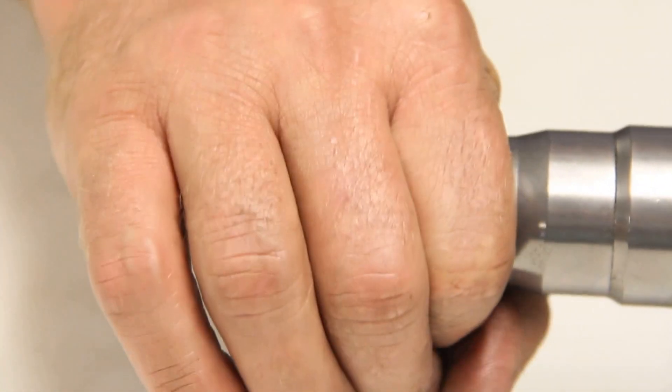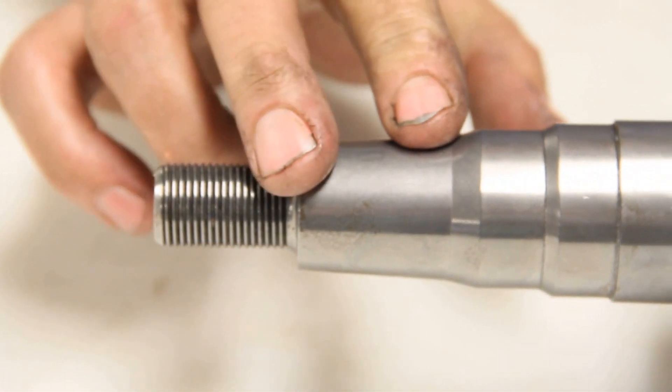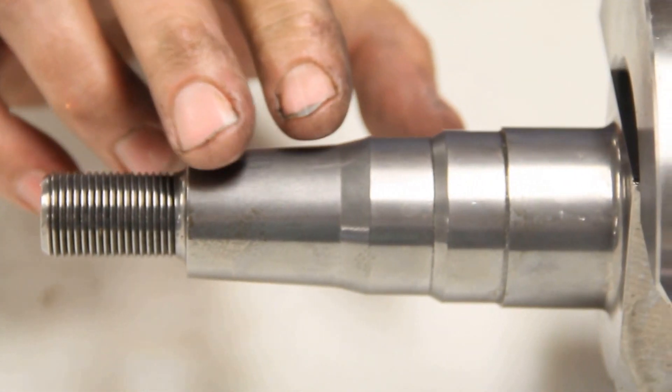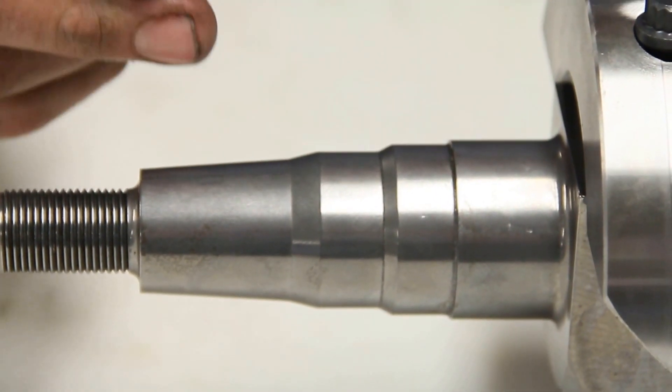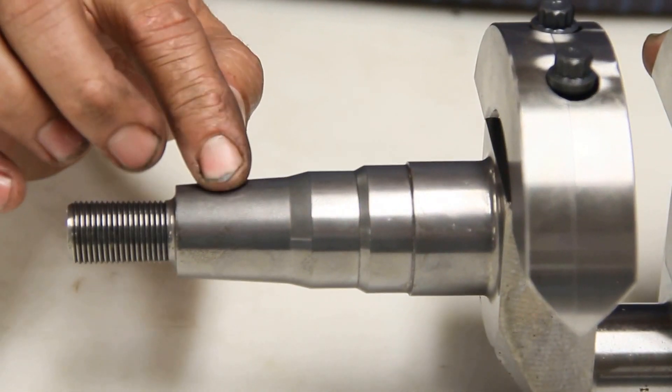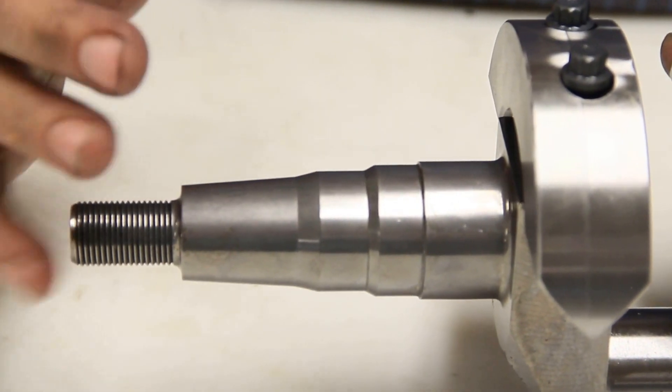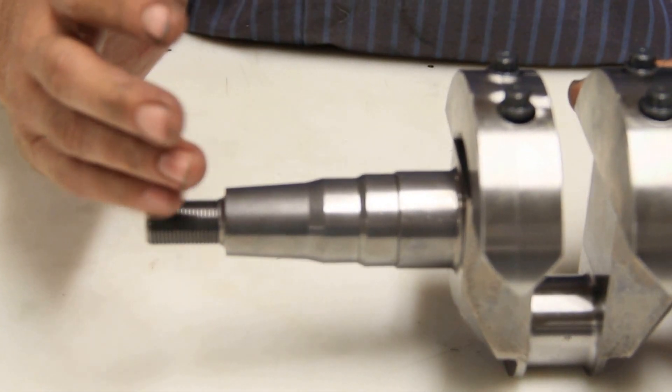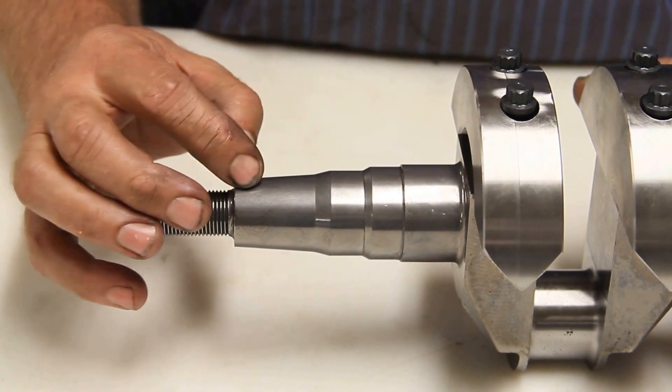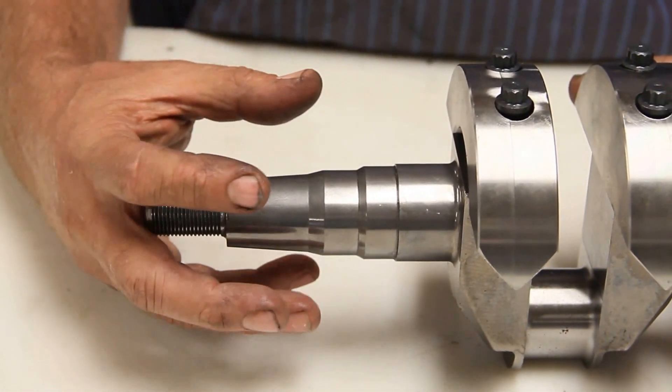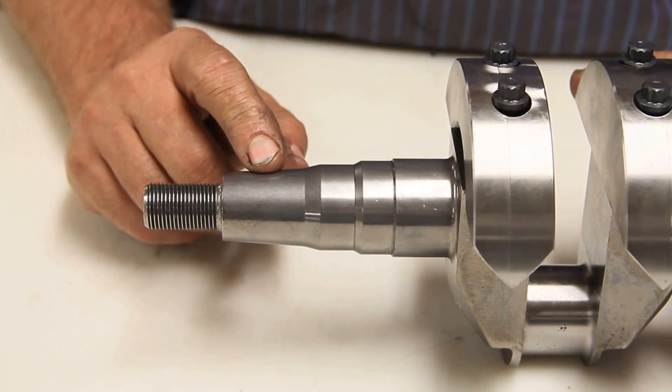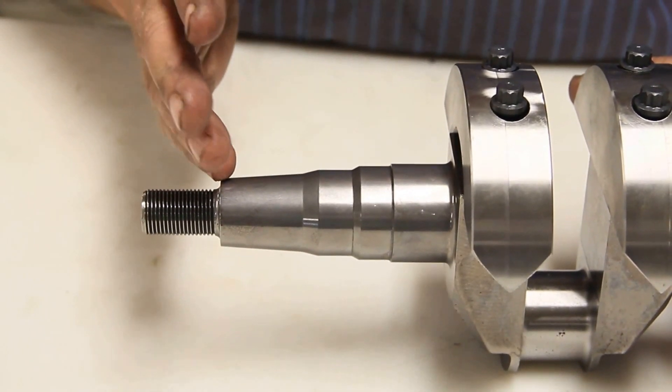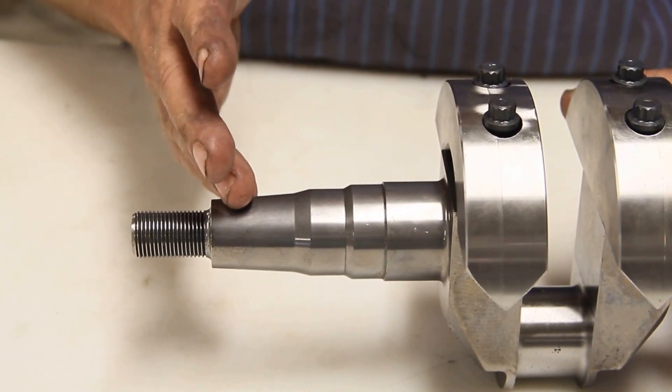I always put a little bit of red Loctite on here, that way it keeps the crankshaft from fretting. Fretting is spelled F-R-E-T-T-I-N-G, and that is when you get a transfer of metal from the crankshaft, from the flywheel onto the crankshaft, and that's usually done through harmonics in the engine. Like a single cylinder has a lot of harmonics in it, and it will actually fret metal onto that taper.